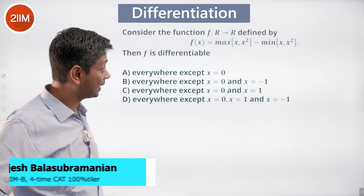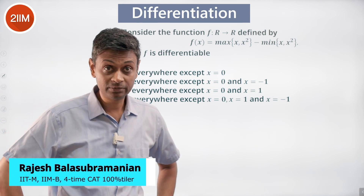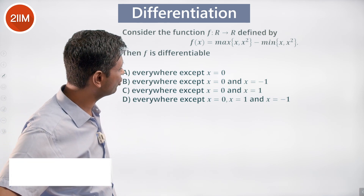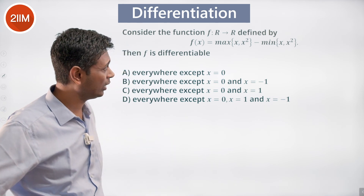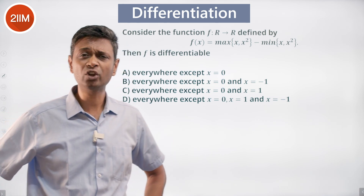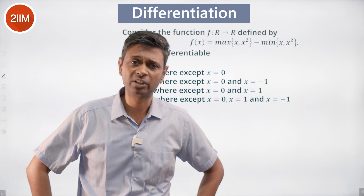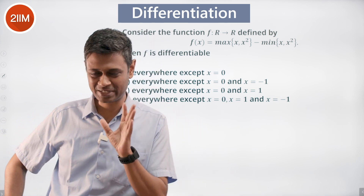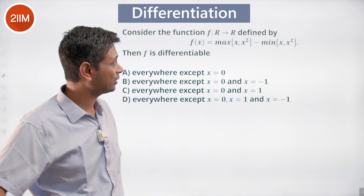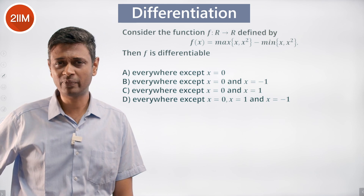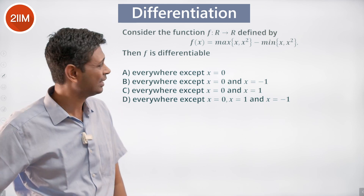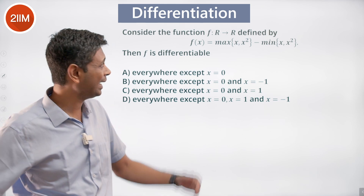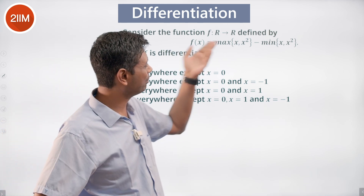Consider the function from real to real defined by f(x) = max(x, x²) minus min(x, x²). We need to figure out when x² will be more and when x will be more, so first of all let's think about max and min.